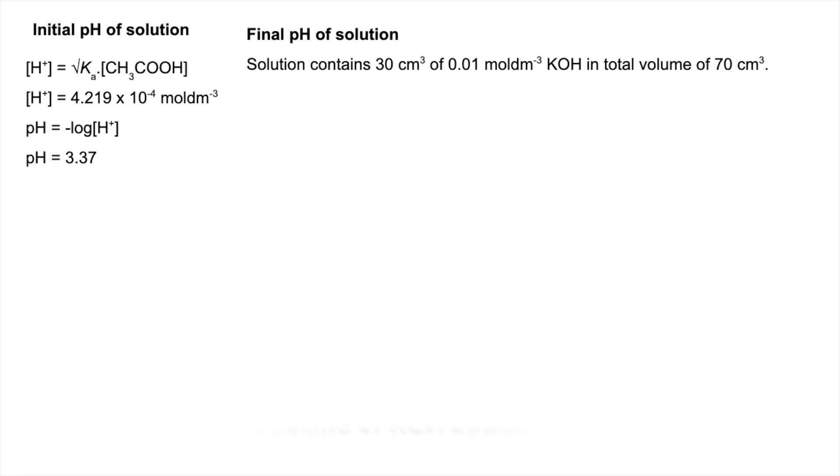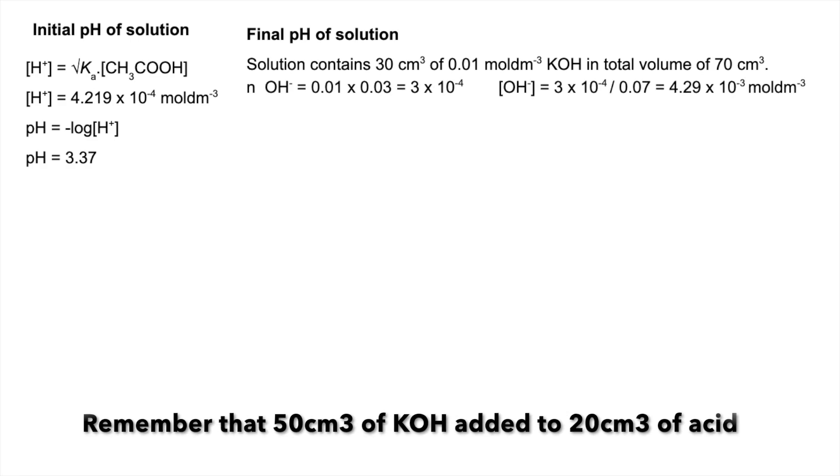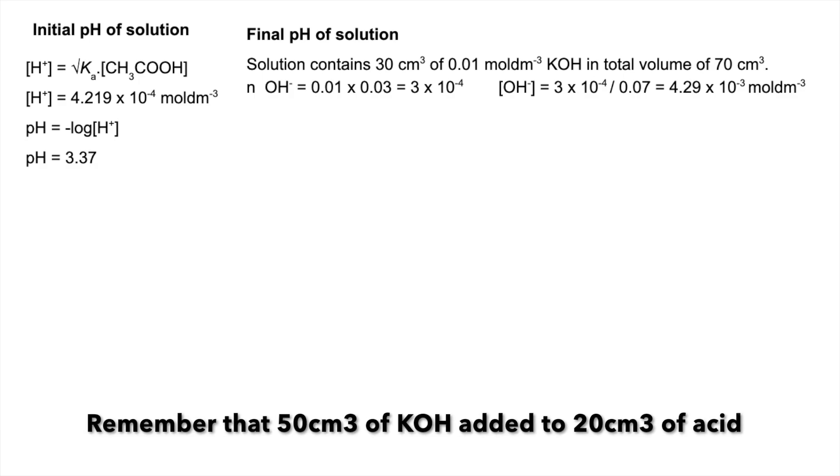We're going to work out the moles of OH- ions and then turn that into a concentration. That's the calculation there. Moles concentration times volume, and then concentration of the OH- ions is the moles divided by the total volume of the solution, 70. That comes out at 4.29 times 10 to the minus 3 moles per decimeter cubed.